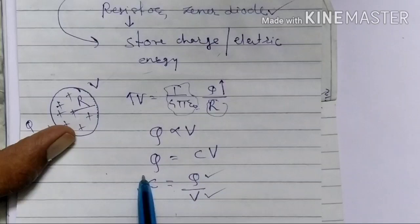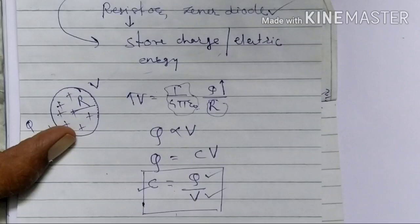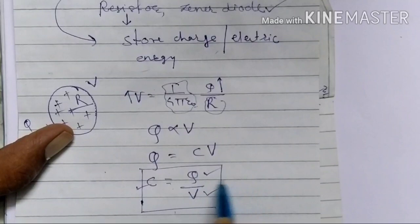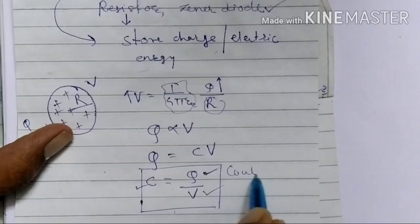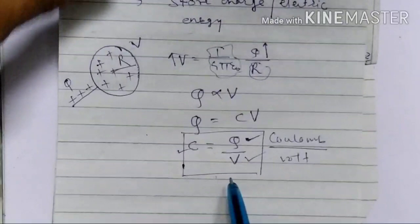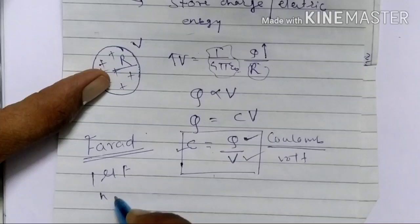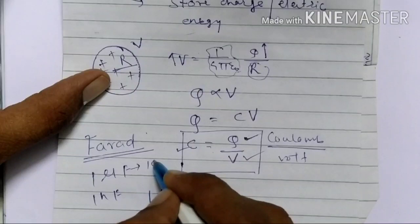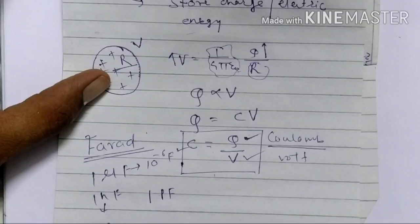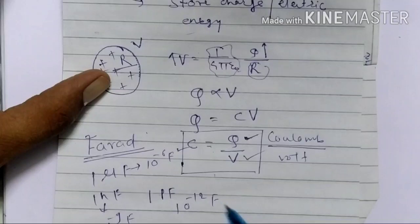C is equal to Q divided by V — this is the capacitance of a capacitor. The unit of capacitance is Coulomb per Volt, and the SI unit of capacitance is Farad. Farad is a larger unit, so in practical situations we use 1 microfarad, 1 nanofarad, or 1 picofarad. 1 microfarad means 10 raised to minus 6 Farad, 1 nanofarad means 10 raised to minus 9 Farad, and 1 picofarad means 10 raised to minus 12 Farad.